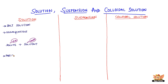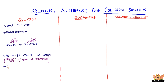Solute particles in a solution cannot be seen as the particle size is less than 1 nanometer. The solute particles can be separated by evaporation. When the solution is left undisturbed, the solute particles do not settle down. A solution is said to be stable.